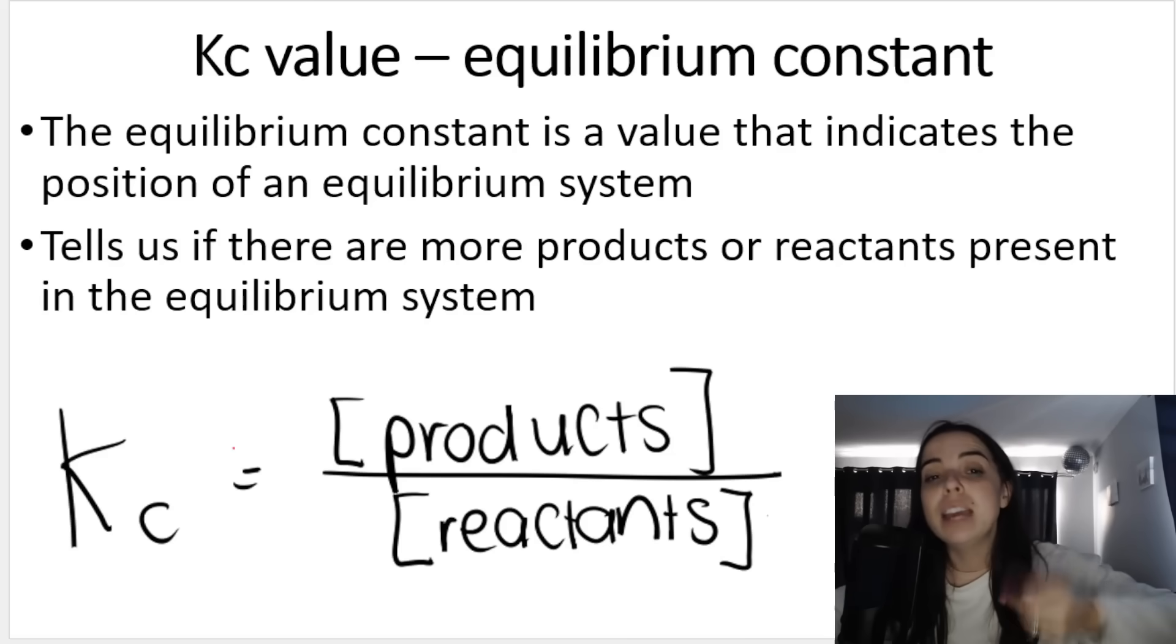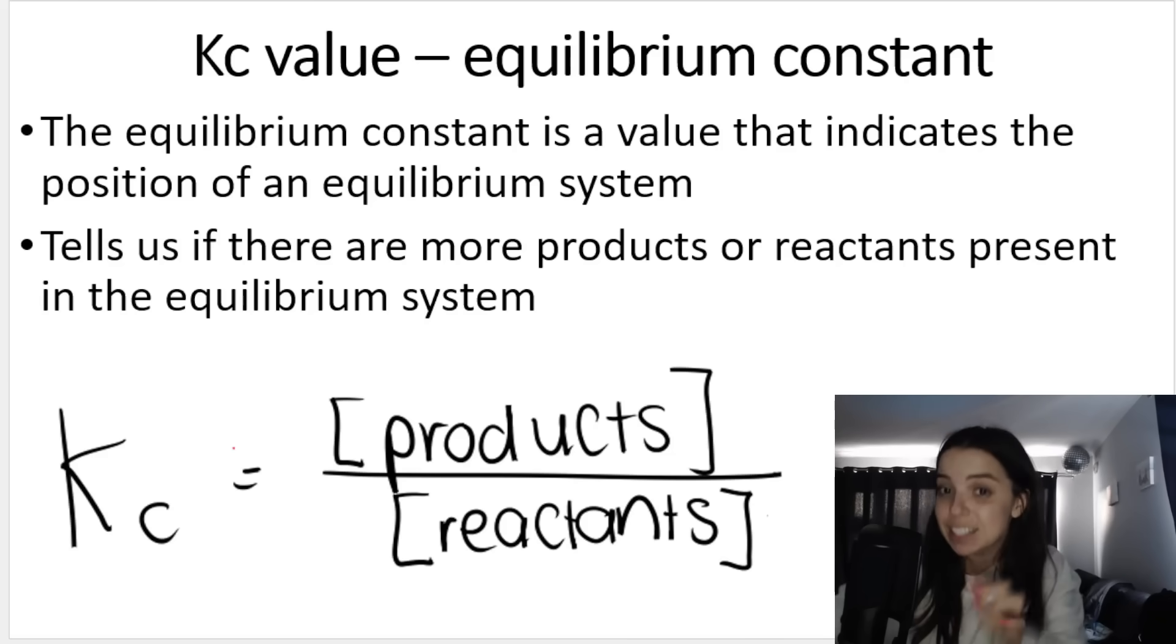When that happens, there's sometimes more products present at equilibrium or sometimes there's more reactants present at equilibrium. And using this formula over here to calculate Kc tells me about the position of chemical equilibrium.